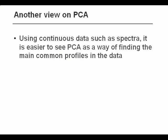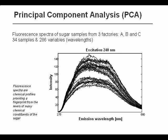Let's describe PCA in a slightly different way. We will use continuous data, spectra, because that will help us make the point. This is a data set consisting of approximately 300 individual variables, but they are continuous because they are fluorescent spectra.